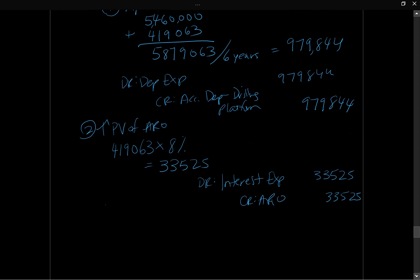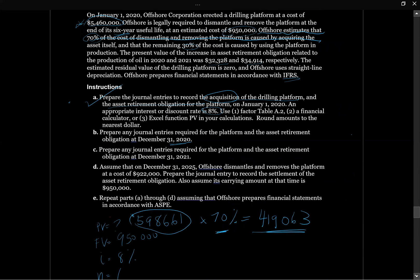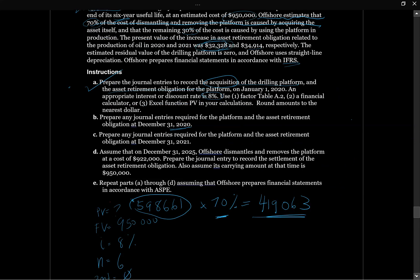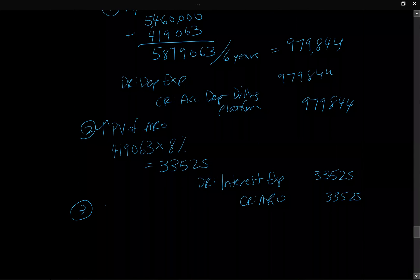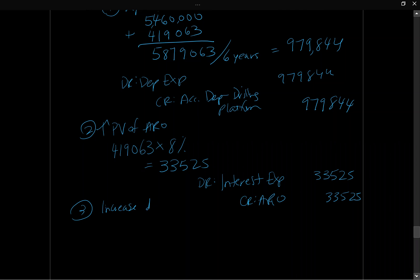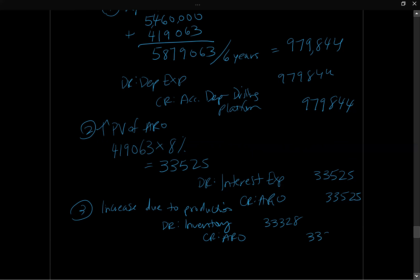The last adjusting entry is specific to this question — not always required. The question tells us that the present value of the increase in the asset retirement obligation related to production in 2020 was $32,000 and $34,000 — specifically $33,328. We need to increase our ARO by that amount. Under IFRS, the debit goes to Inventory as a product cost, so this cost will flow through the income statement when the oil is sold. The credit is to ARO for $33,328.